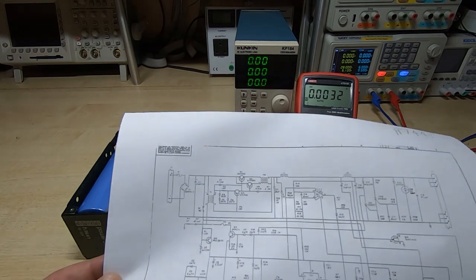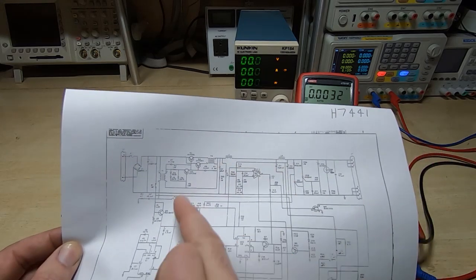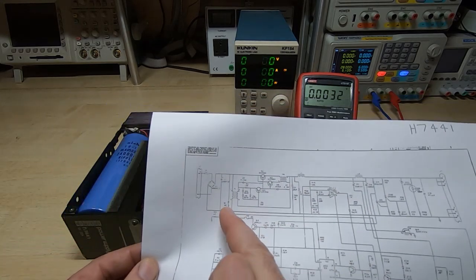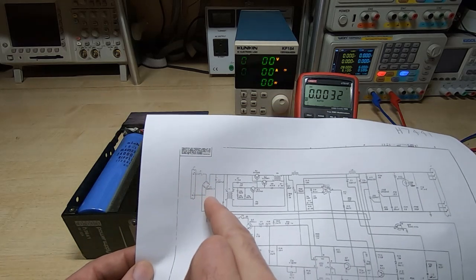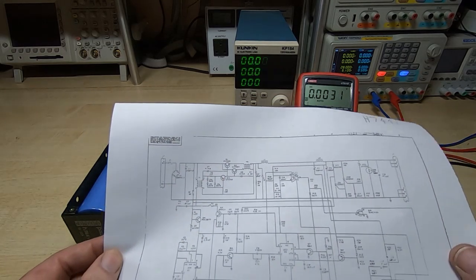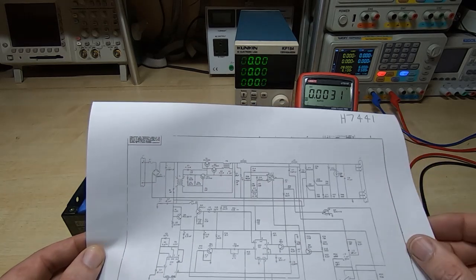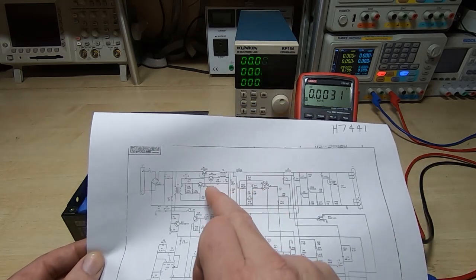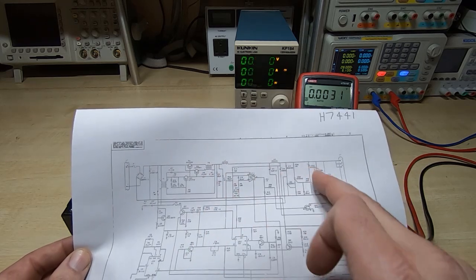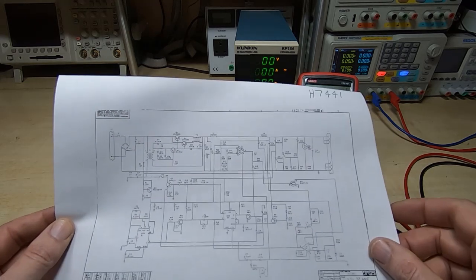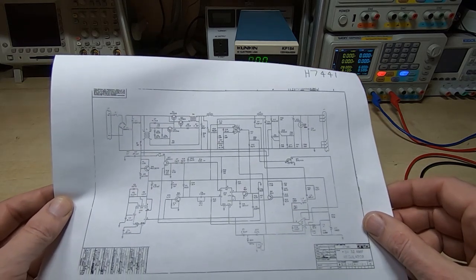They're relatively straightforward switching supplies, but because they run on low voltage AC rather than mains, it makes them quite nice and easy to work on. The general topology of this is very similar to the general mainstream switching supplies at the time, so it's quite easy to work on.